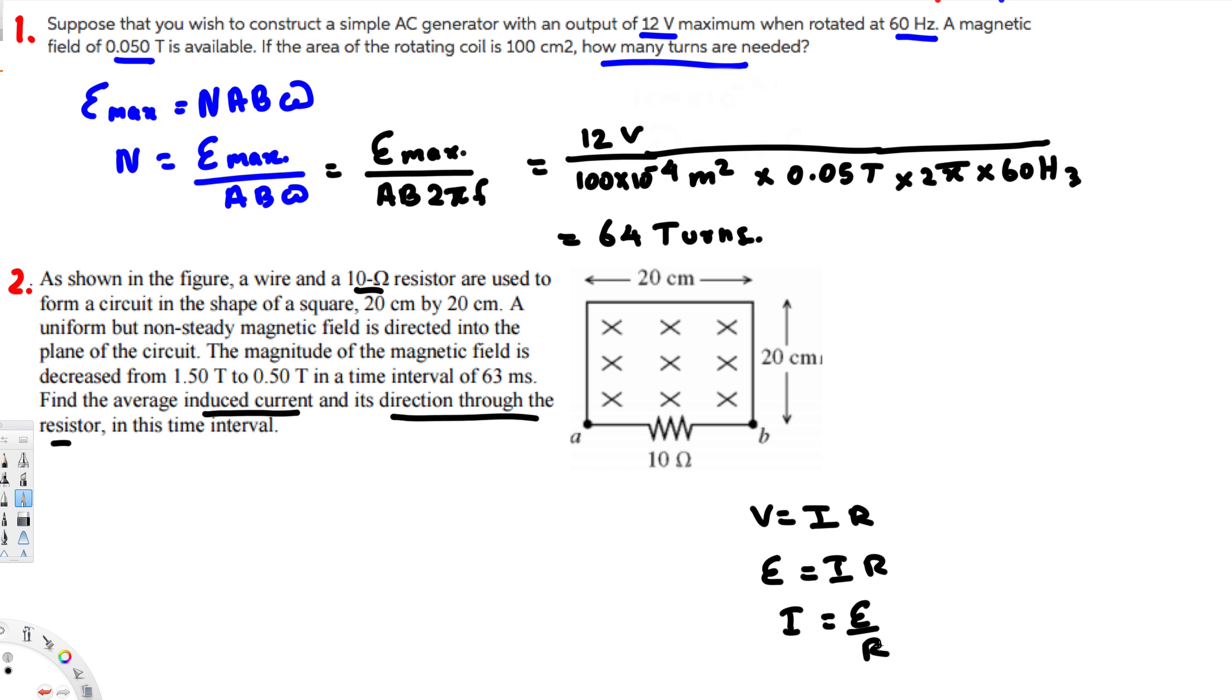We can calculate the EMF using this equation: E is equal to minus d magnetic flux over dt. But we don't have the magnetic flux either. Magnetic flux is equal to A times B, area times magnetic field. So if you plug this equation right here, this is going to be minus A dB over dt.